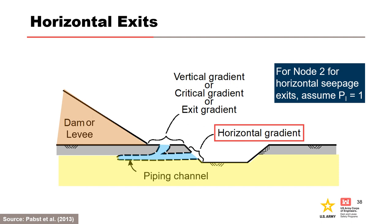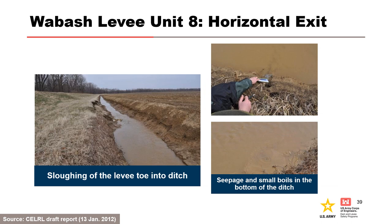Backward erosion piping channel formation with initiation at two potential locations near the embankment toe is shown for illustrative purposes; both would not form simultaneously. Upward vertical hydraulic gradients are resisted by gravity and relate to the potential for heave or blowout. Horizontal hydraulic gradients are internal gradients along a seepage pathway where gravity is not a resisting force, and little to no horizontal gradient is required for initiation—reflected by assuming a probability of initiation of 1 for horizontal exits. At Wabash Levee Unit 8, a farmer dug a ditch at the landside levee toe, creating a horizontal seepage exit, and the levee ultimately breached.